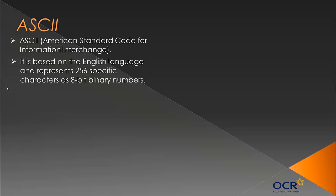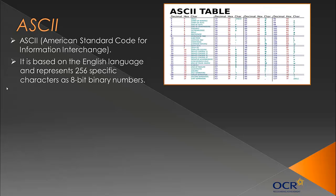ASCII is based on the English language and it represents 256 specific characters as 8-bit binary numbers. This is an ASCII table — it's a bit small, you don't need to learn it. For every character it has the hex equivalent, which will then be translated to binary.